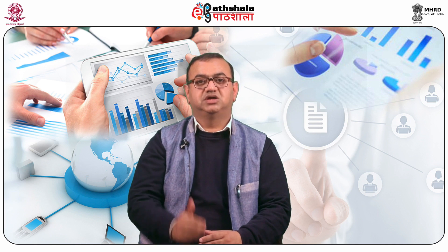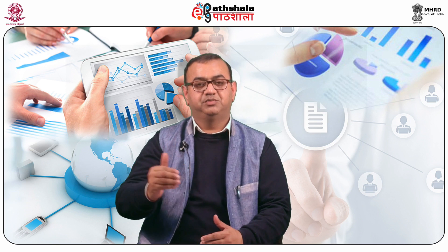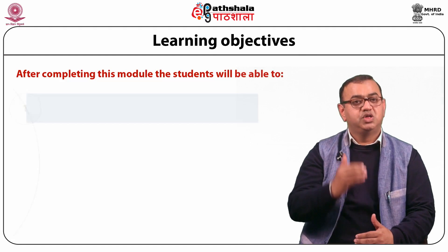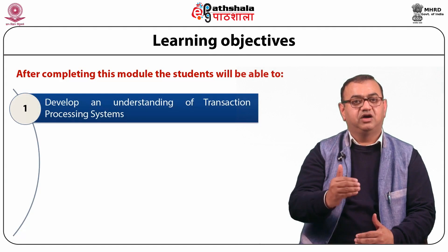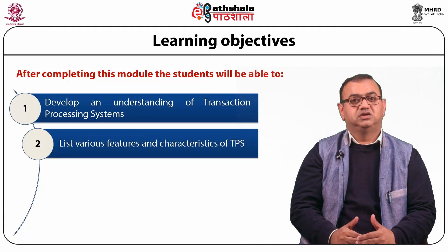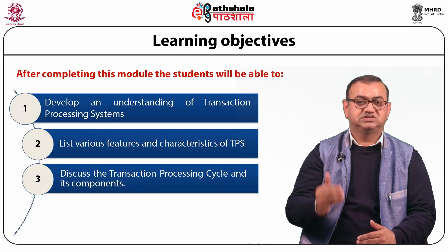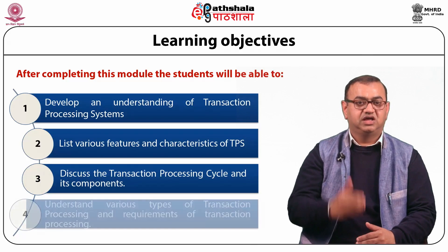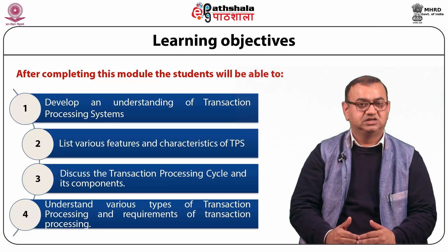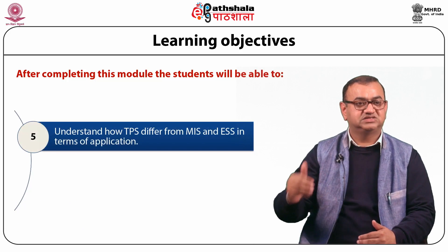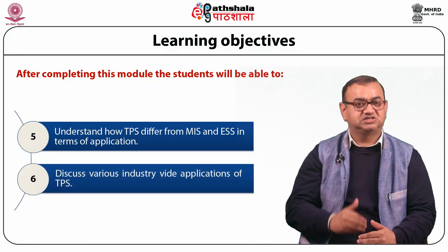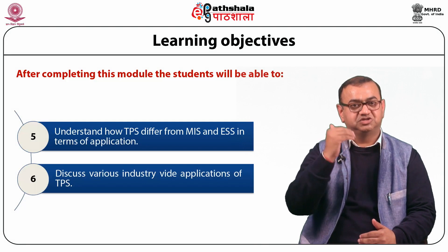Today we are going to discuss the module on transaction processing under the paper Management Information System. After completing this module, students would be able to develop an understanding of transaction processing systems, list various features and characteristics of TPS, discuss the transaction processing cycle and its components, understand various types of transaction processing and requirements, understand how TPS differs from MIS and ESS, and discuss various industry-wide applications of transaction processing systems.